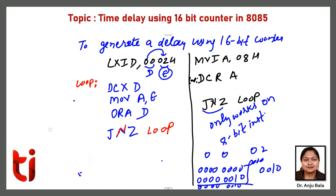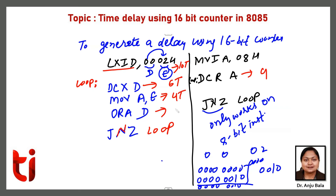For calculating the delay we need to find the number of T-states for each instruction. LXI D takes 10 T-states. DCX D takes 6 T-states — 4 T-states for opcode fetch and 2 additional T-states to decrement the 16-bit register pair. MOV A,E takes 4 T-states. ORA D takes 4 T-states. JNZ takes either 10 T-states (branch taken) or 7 T-states (exit from loop).